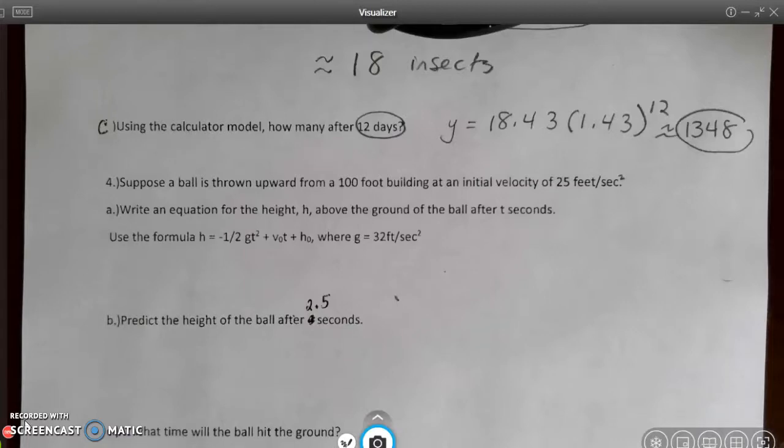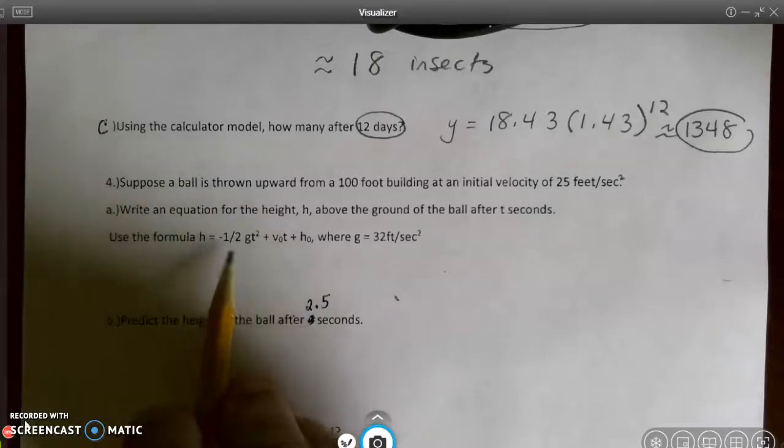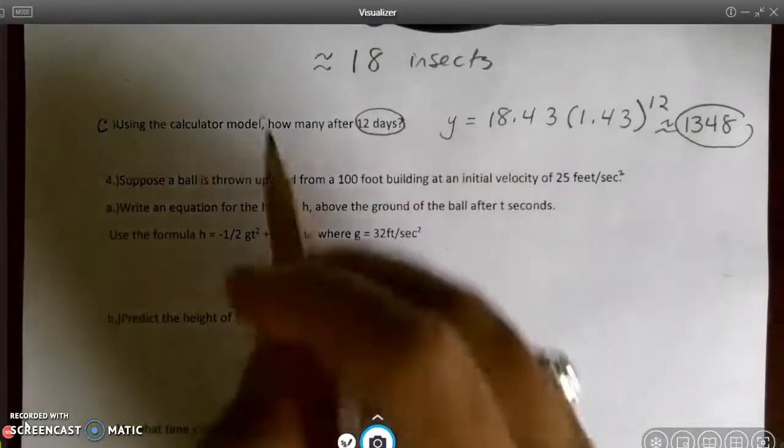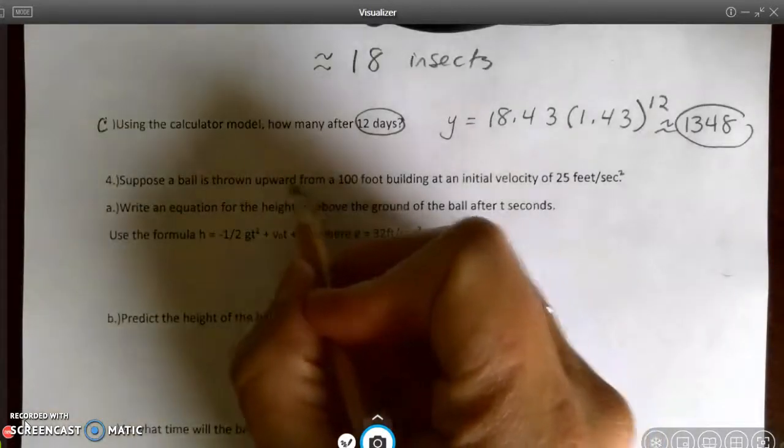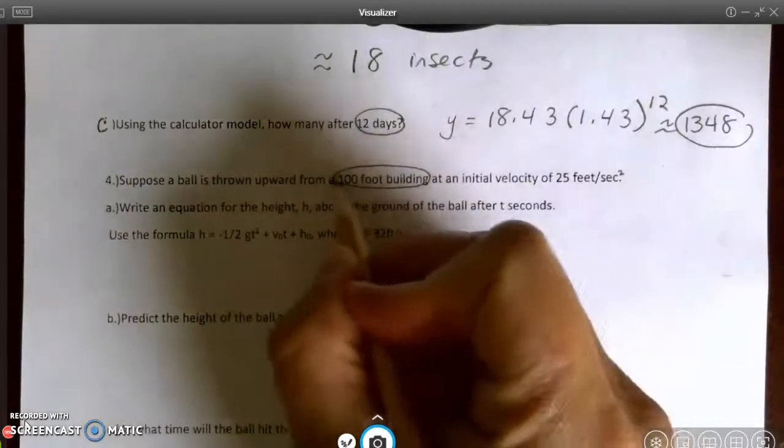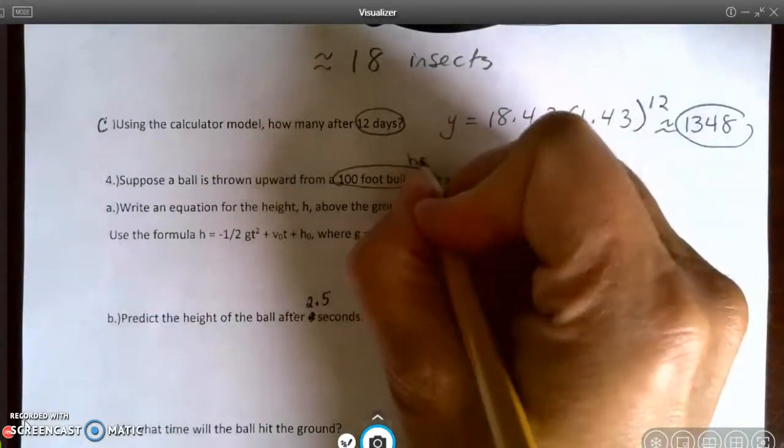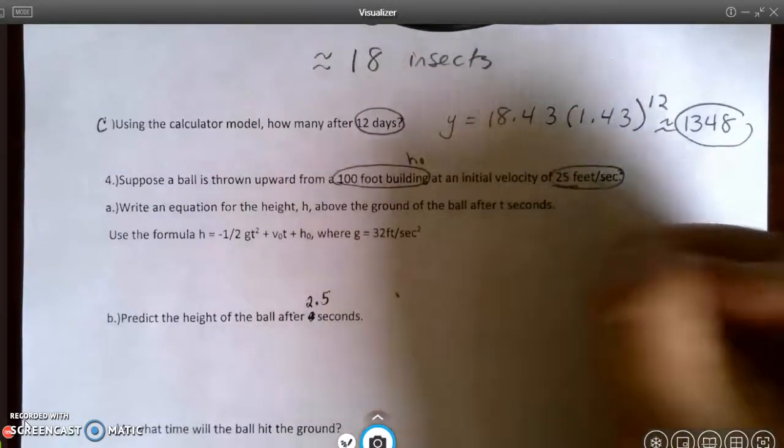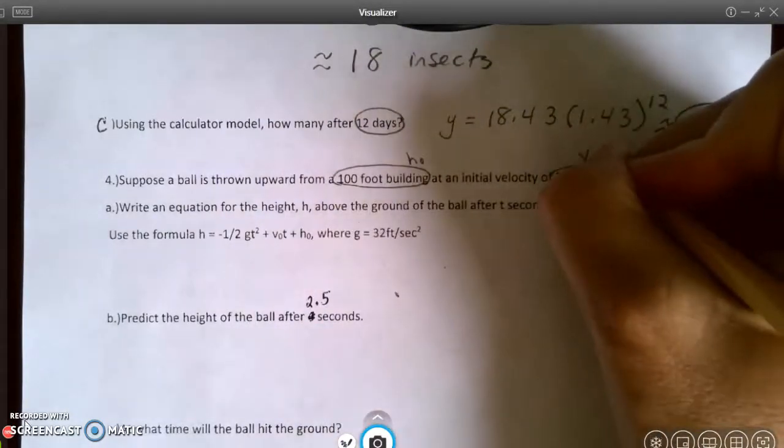All right, so we're going to be using the formula negative 1 half gt squared plus initial velocity times t plus initial height. So since it's thrown upward from a 100-foot building, that is my initial height. So that's my h sub 0. Initial velocity is 25 feet per second squared. So that's my v sub 0.